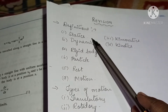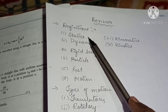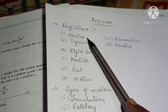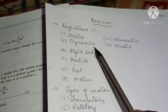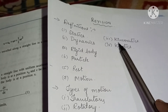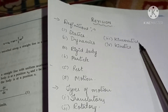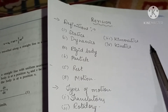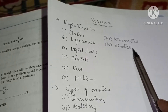Statics is the study of bodies at rest. Dynamics is the study of bodies in motion. Kinematics is the study of motion without considering the cause of motion. Kinetics studies the motion of a body along with its cause — how the motion was produced.